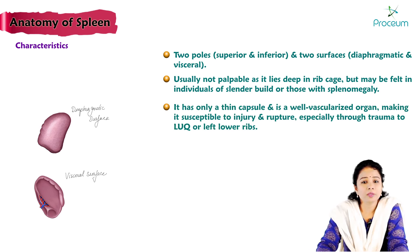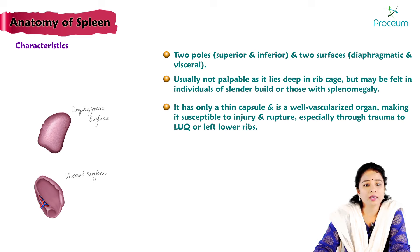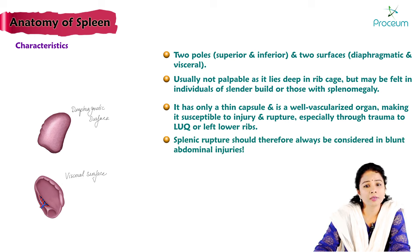The spleen has only a thin capsule and is a well-vascularized organ, making it susceptible to injury and rupture — especially through trauma to the left lower ribs. Splenic rupture should therefore always be considered in blunt abdominal injuries.